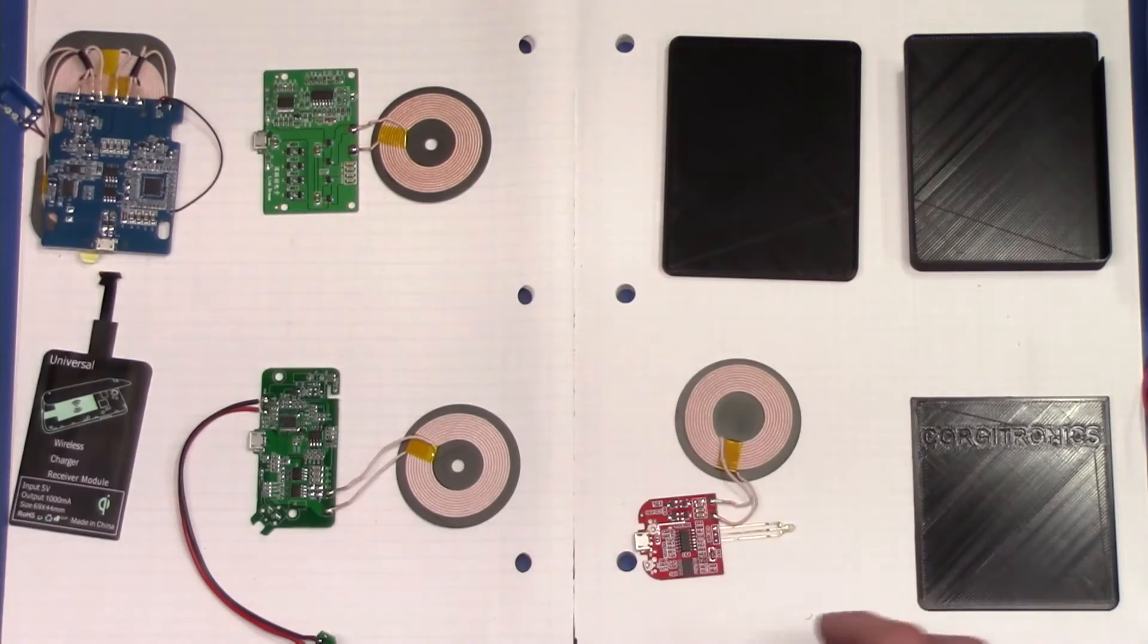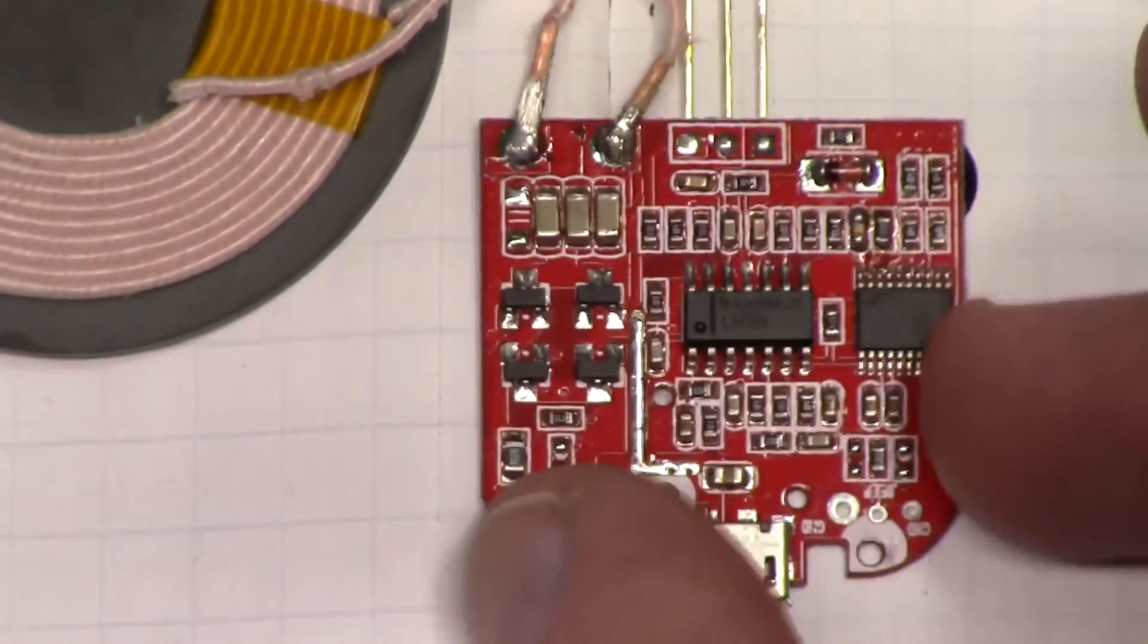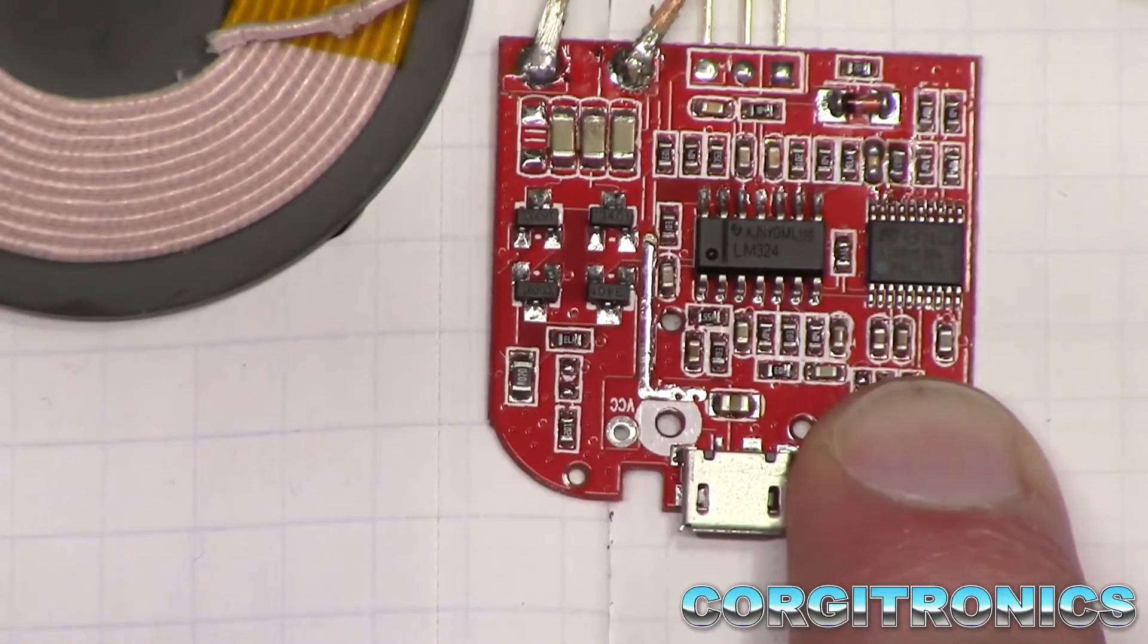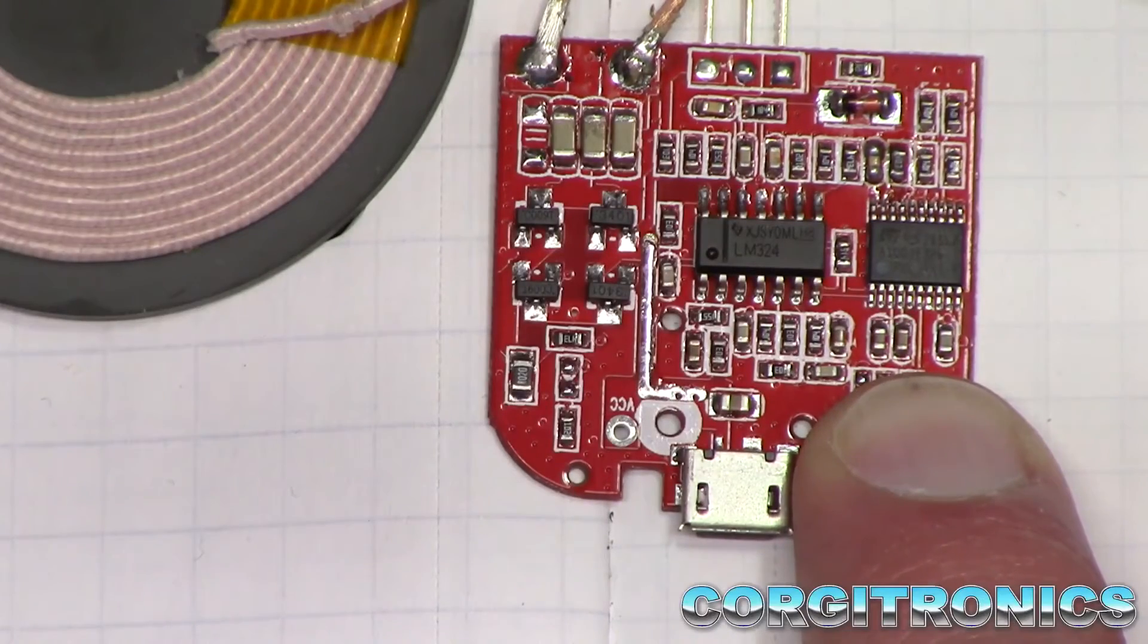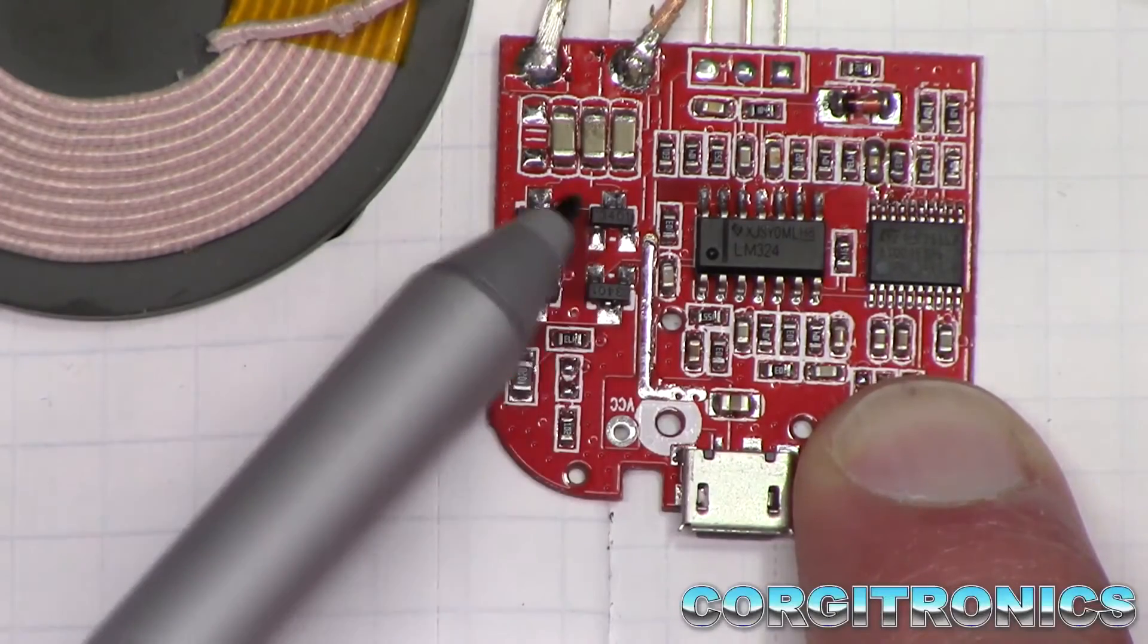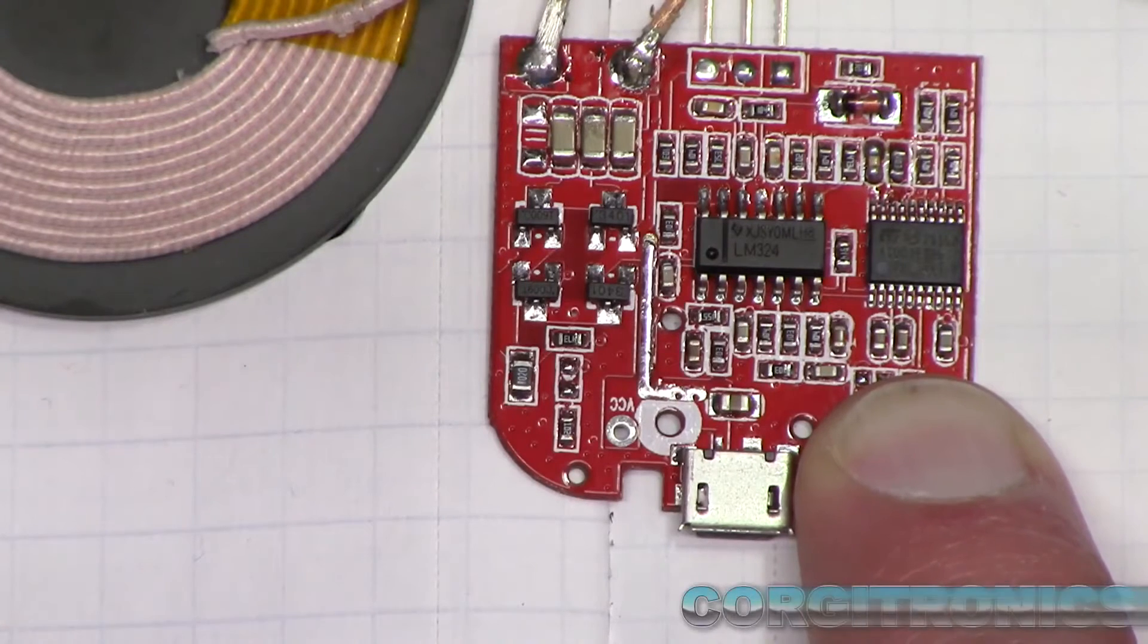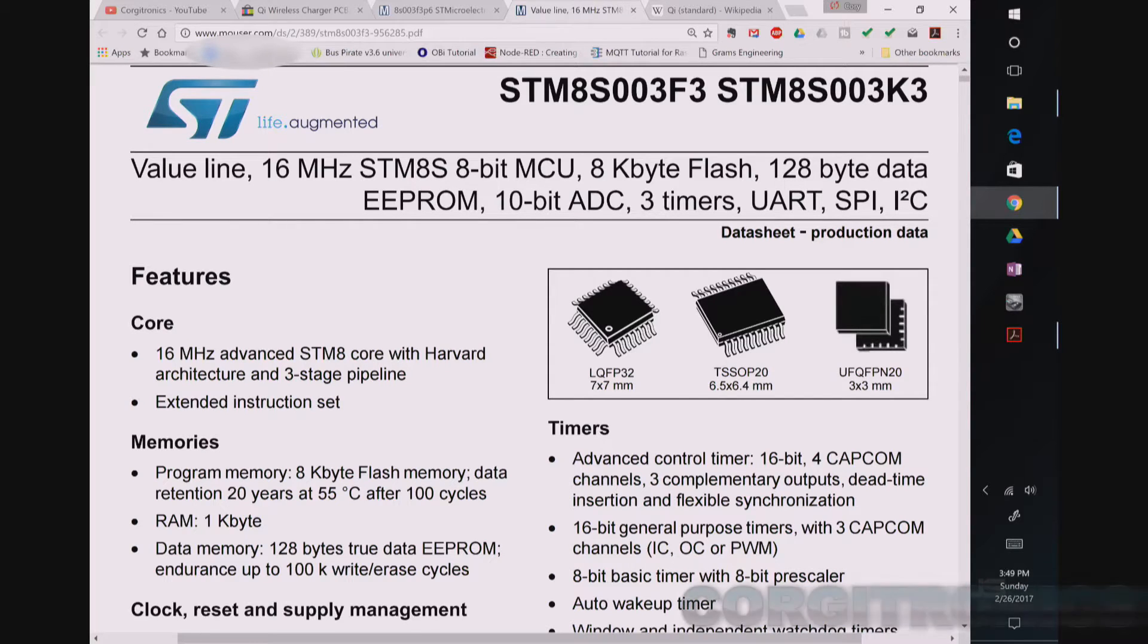Let's take a closer look at the board here and see what's going on. And it's very small. It's going to fit very well into my little case. What we have here is a small ST micro. This is a 8S003F3P6 right here. And that is a straightforward 16 megahertz Harvard architecture microcontroller. That's really it.